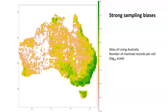If we used this information naively to understand where mammal species are across the landscape, we'd conclude there are hardly any mammals in some parts of Australia and many in others. Most likely, this reflects that people have explored and documented mammals more in populated areas. We have really strong sampling biases in these data that we need to understand and account for before we can understand changes in occupancy and range dynamics.